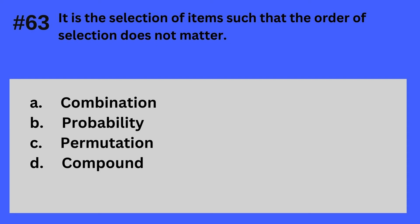Question 63. It is the selection of items such that the order of selection does not matter. A. Combination, B. Probability, C. Permutation, D. Compound. The answer is A — Combination.